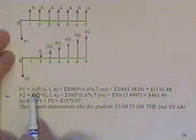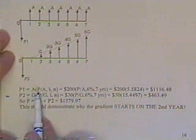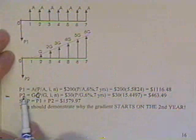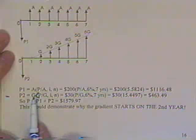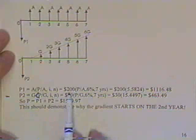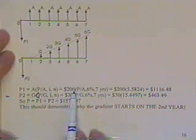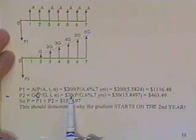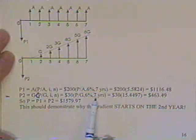P1 is the amount of money I need to fund the annuity, and P2 is the amount that I would need to fund the gradient. P1 is A times P over A. That changes the annuity into the present value. P2 is G, the known gradient, times P over G. The annuity is $200 every year. The gradient is $30, $60, $90, $120, for 7 years.